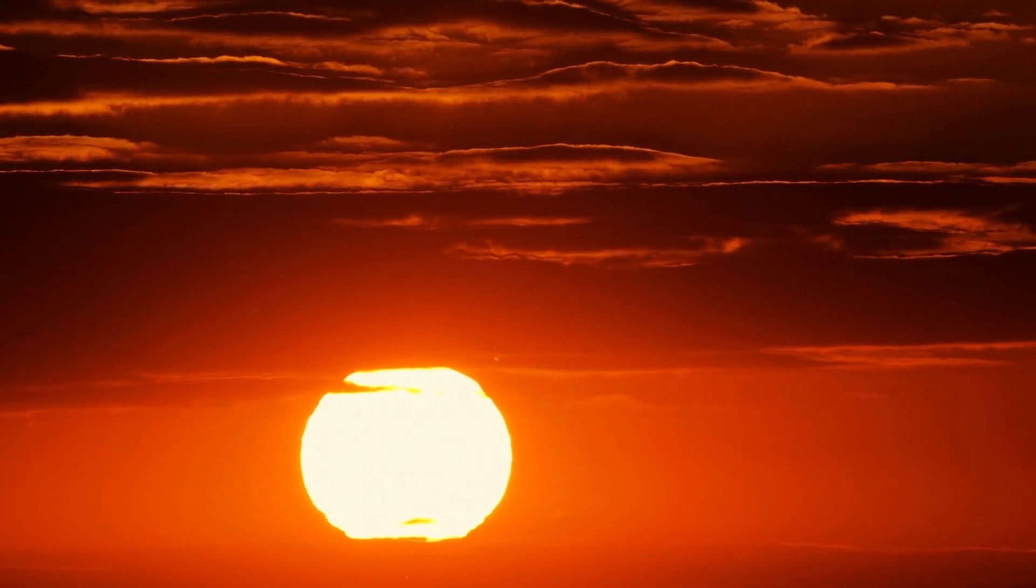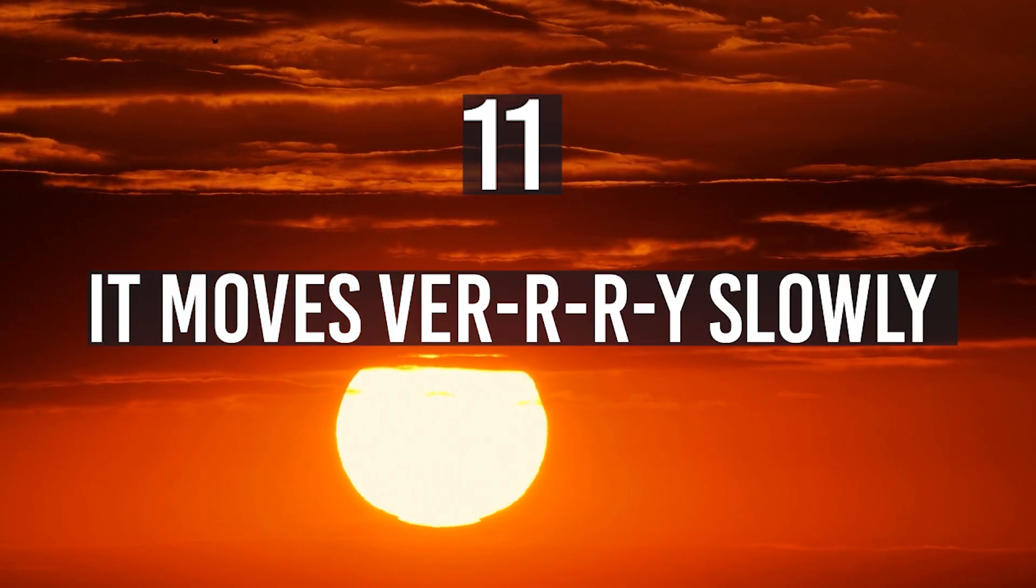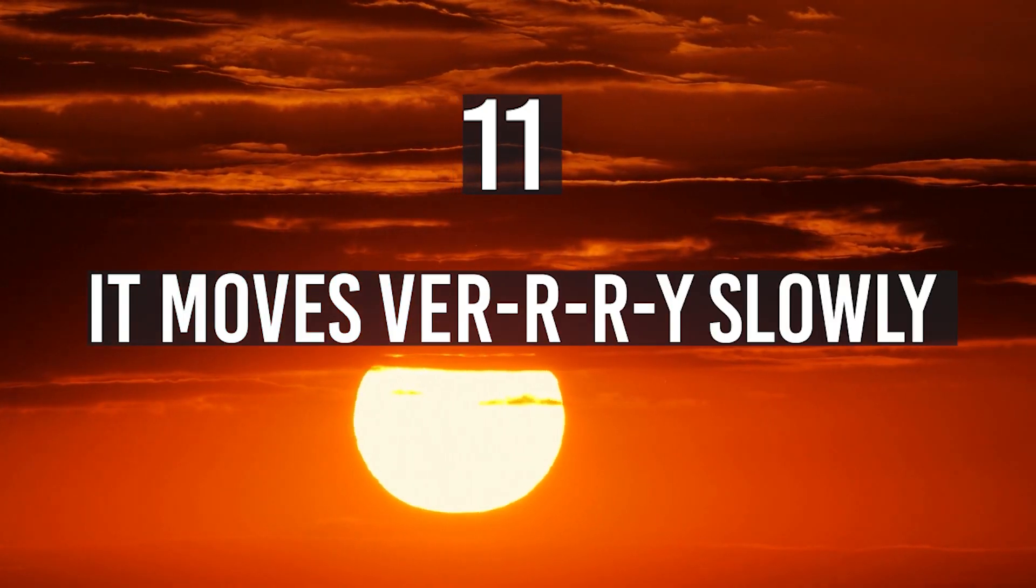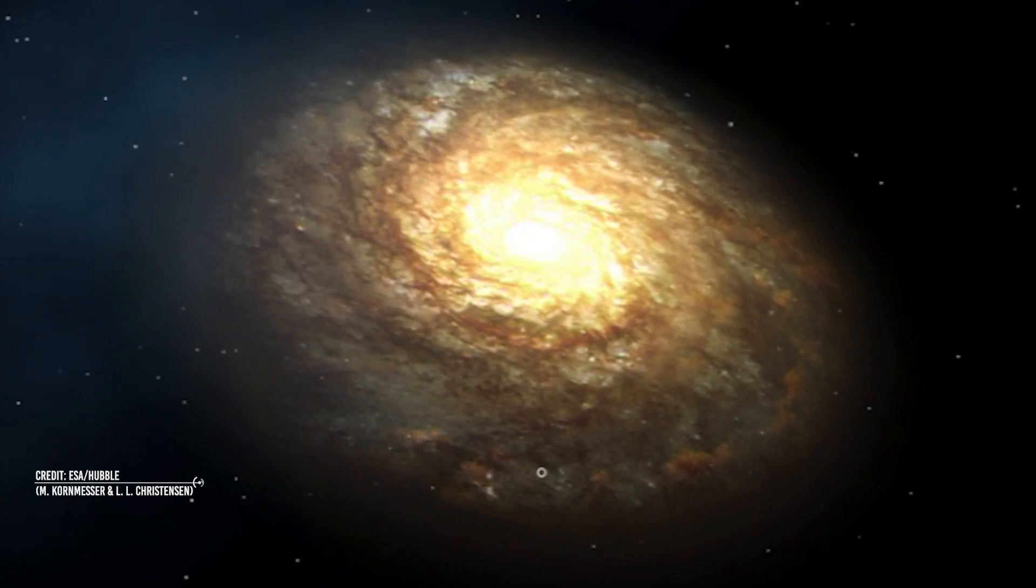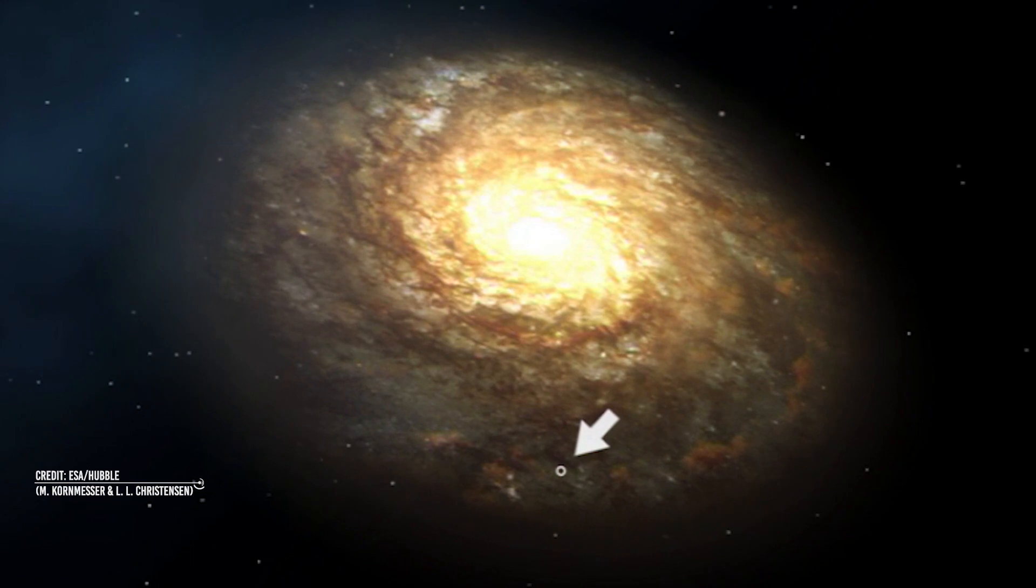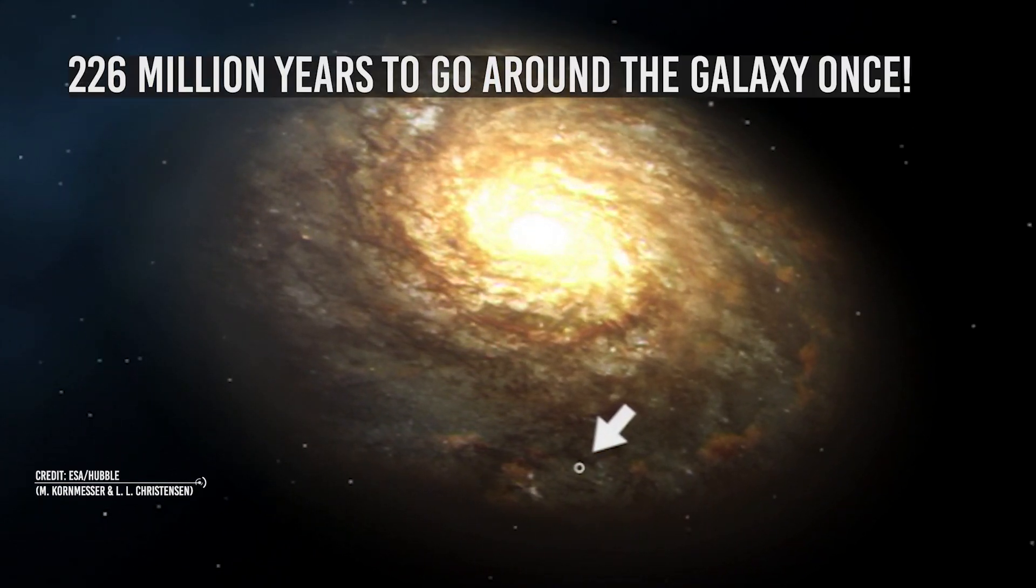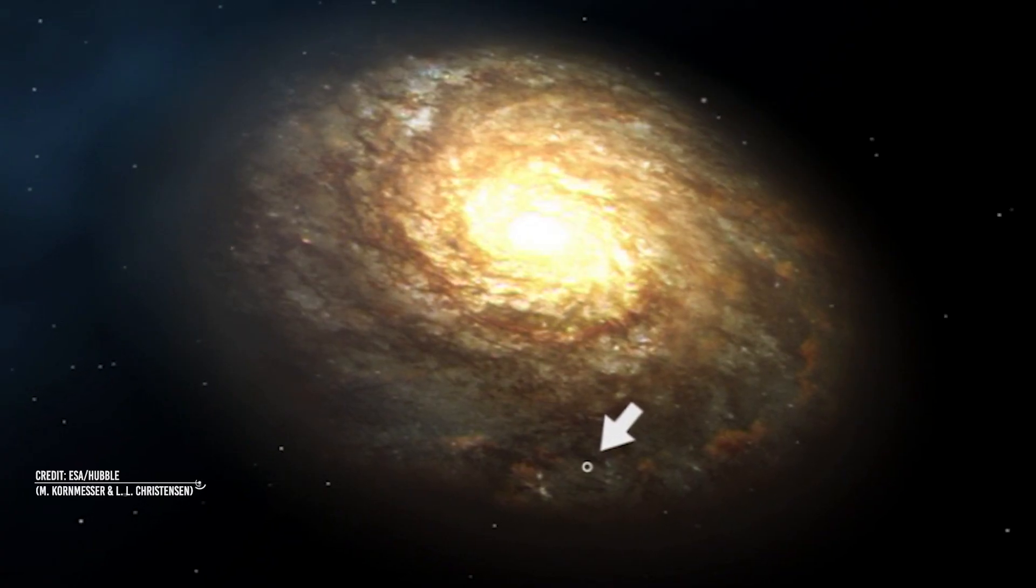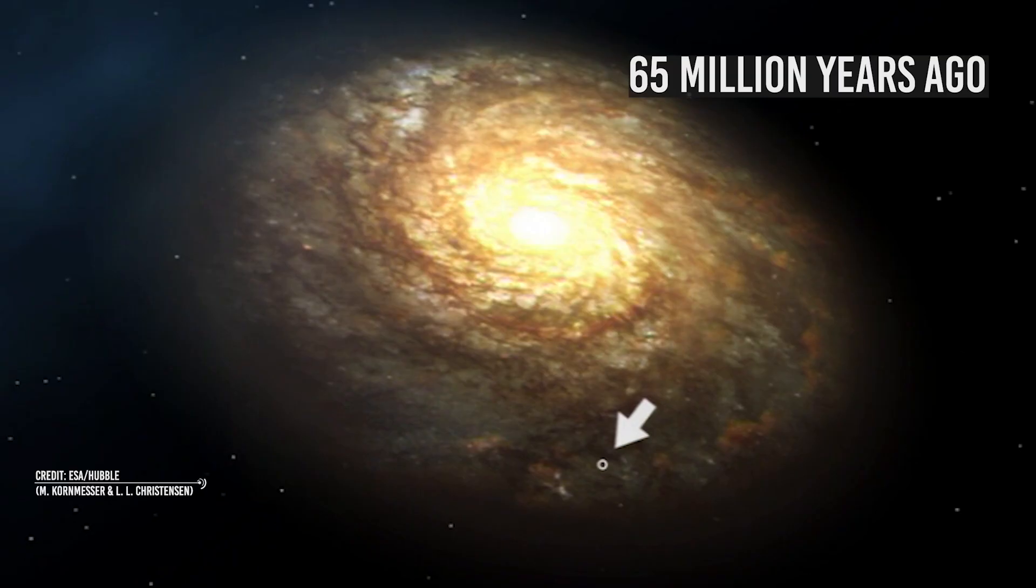This giant object wanders in space. What we know is that, number 11, it moves very slowly. The Sun is the center of our solar system, of course, but it doesn't stay in one place. It orbits the center of the Milky Way galaxy, and it takes the Sun about 226 million years to go around the galaxy once. For comparison, the dinosaurs went extinct around 65 million years ago.